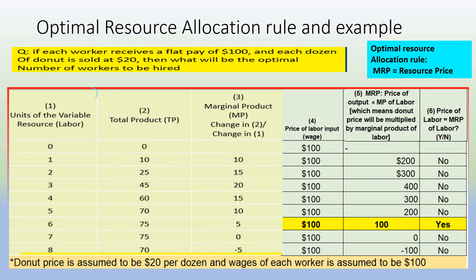Column three measures the marginal product of a particular worker. For example, if worker one has a marginal product of 10, we find that by taking the difference in total product — from zero workers to one worker, which is 10 — and dividing by the change in column one, which is one. So marginal product of the first worker is 10. Similarly, the second worker's marginal product is 15, because the difference between 10 dozens and 25 dozens is 15 dozens, divided by a change of one worker.